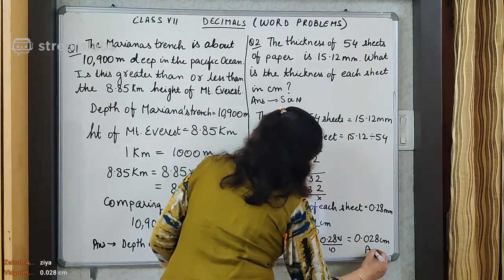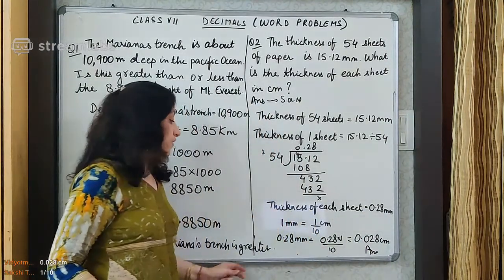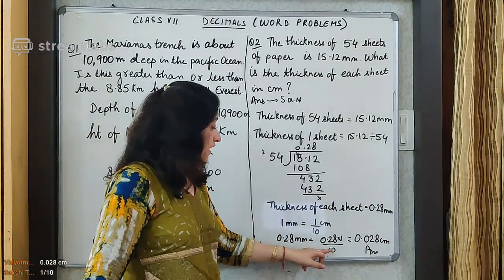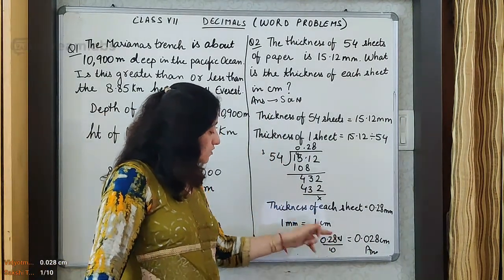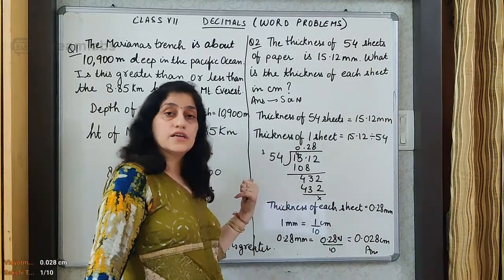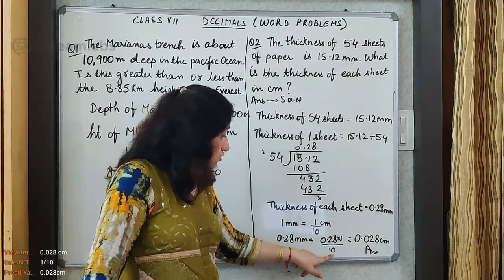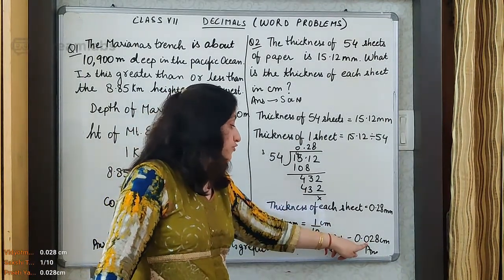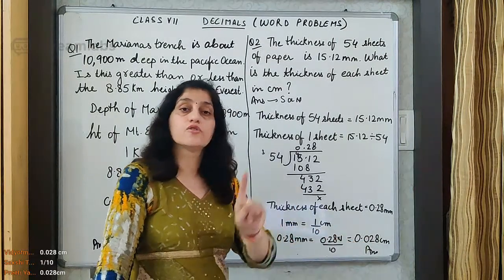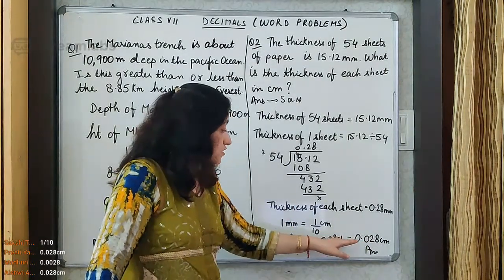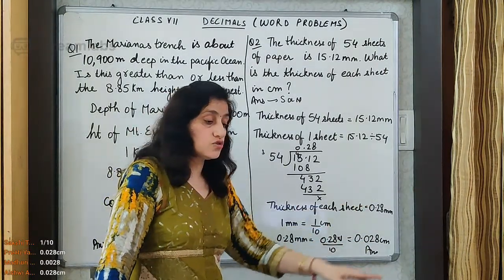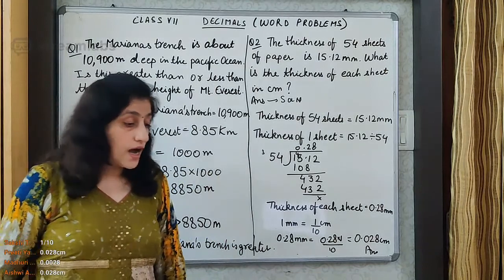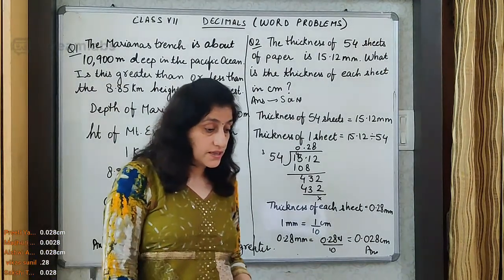You remember we have done this division also. When we divide by 10 or a power of 10, the decimal moves towards the left that many times. So my decimal has moved towards the left one more time. Therefore, 0.028 is the answer. I hope this is clear now.